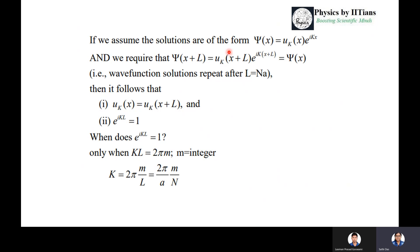Now if we assume the solution ψ(x) is of the Bloch function form - that is u_k(x)e^(ikx) - and we put a periodic potential with the same periodicity of the lattice, that is ψ(x+l) should equal ψ(x). You can write it in terms of u_k as u_k(x+l)e^(ik(x+l)), because the wave function solution should also repeat after the periodicity. We will get two conditions: u_k(x) equals u_k(x+l), and e^(ikl) equals 1.